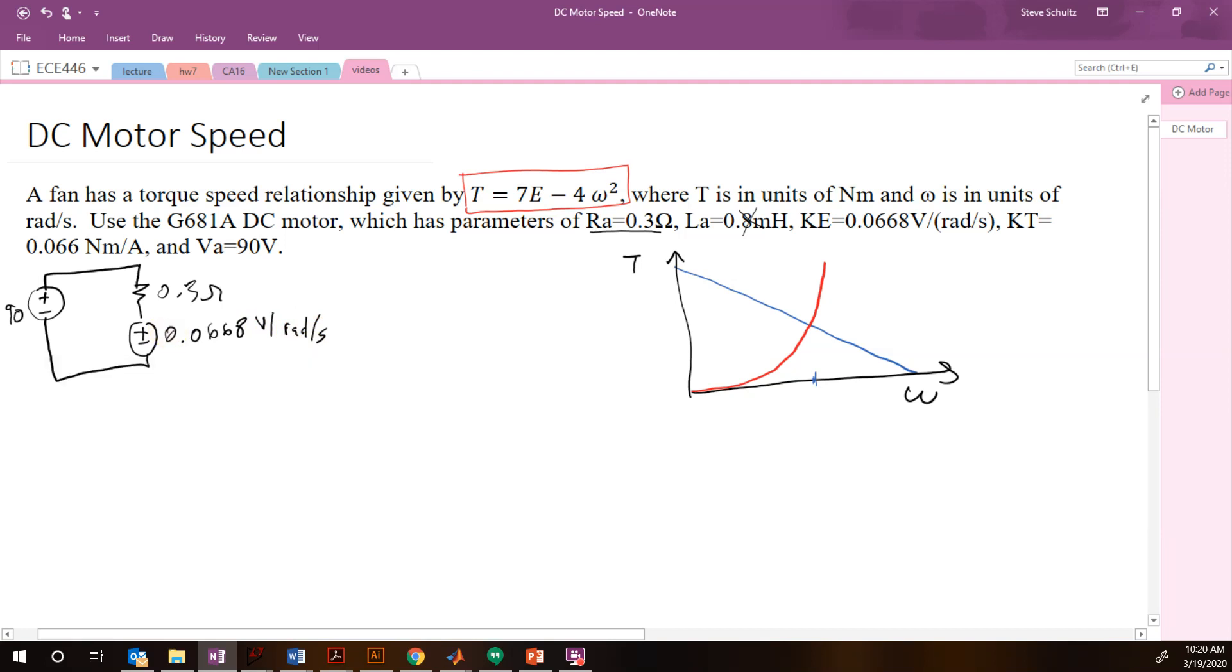Okay, so then we need to get our torque equation. So our torque is going to be equal to KT×I, which is equal to 0.066×I. And then we have to get our current from this circuit. Our current is going to be equal to (90 - 0.0668×ω) all divided by our resistance, 0.3.